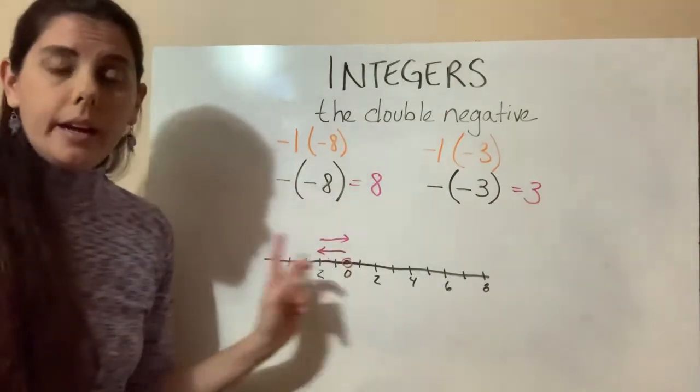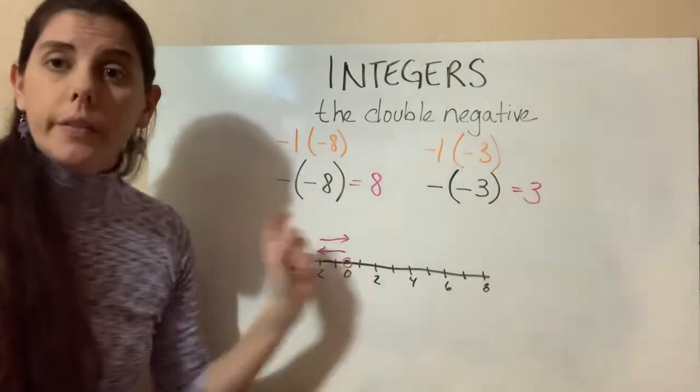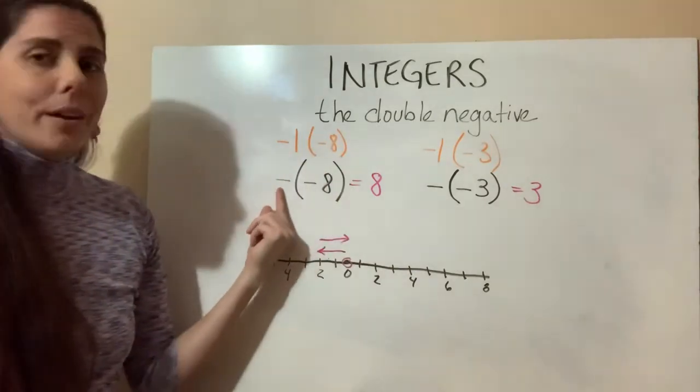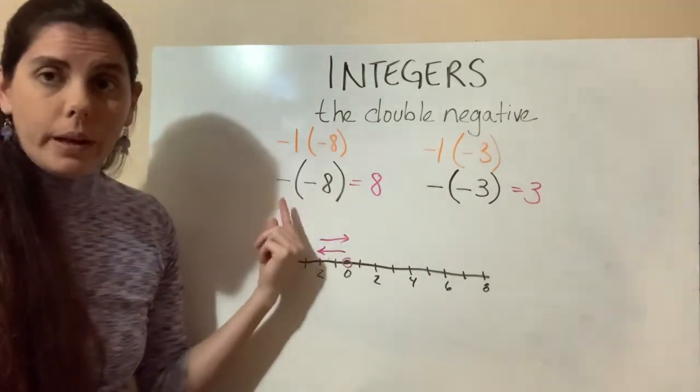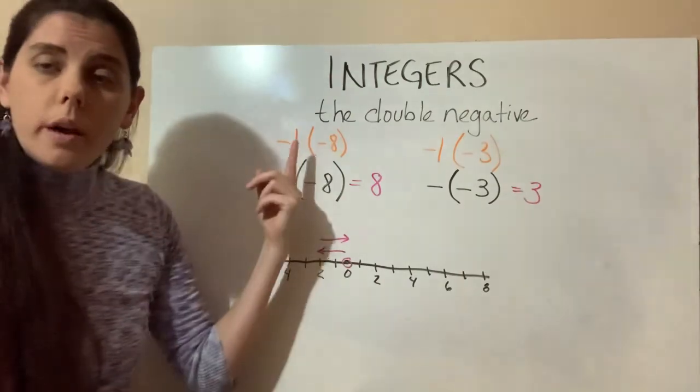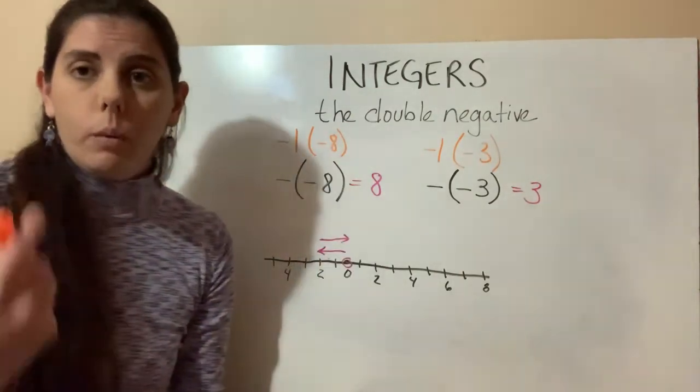So that's another way to look at these double negatives. Either looking at it as the change sign and how you're moving on the number line, or instead of it just having a negative all by itself floating out there, it's a negative one and you're multiplying it by whatever's in the parentheses.